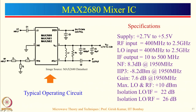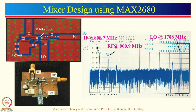In the typical application circuit, the IC receives the LO input through a coupling capacitor and the RF input through a matching network — remember that matching for RF is very important. The IF output is taken at the output port along with biasing components. A PCB has been fabricated using this IC. You can see the IC, power circuitry, RF input with matching network, LO signal coupled via a coupling capacitor, and IF output. The measured performance shows: LO at 1708 MHz, RF at 900.9 MHz, and IF output at 808.7 MHz, which is the difference between the two input signals.